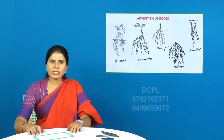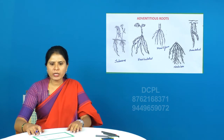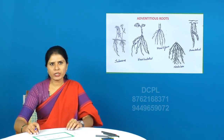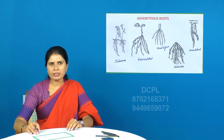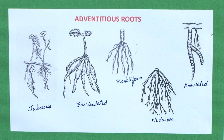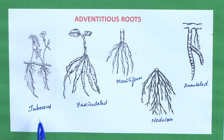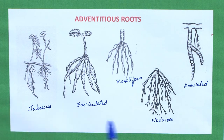Just like the tap root system is modified for storage, adventitious roots are also modified for the purpose of storage. In Ipomoea batatas, the adventitious roots are formed into tuber-like structures in order to store food material.